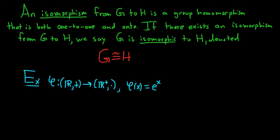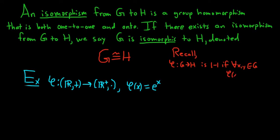First, recall the definitions. φ from G to H is one-to-one if for all x, y in G, whenever φ(x) = φ(y), that implies x = y. If you have a group homomorphism and it's one-to-one, it's called a monomorphism.